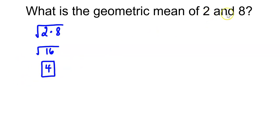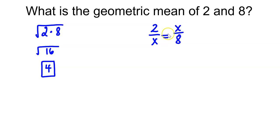Another way to find the geometric mean between two numbers is to set up a proportion. You take one of the numbers and divide it by x, and then you do x divided by the other number. When you find the geometric mean by setting up a proportion, x would be along the diagonal, and the other two numbers that you're finding the geometric mean of would be along the other diagonal.